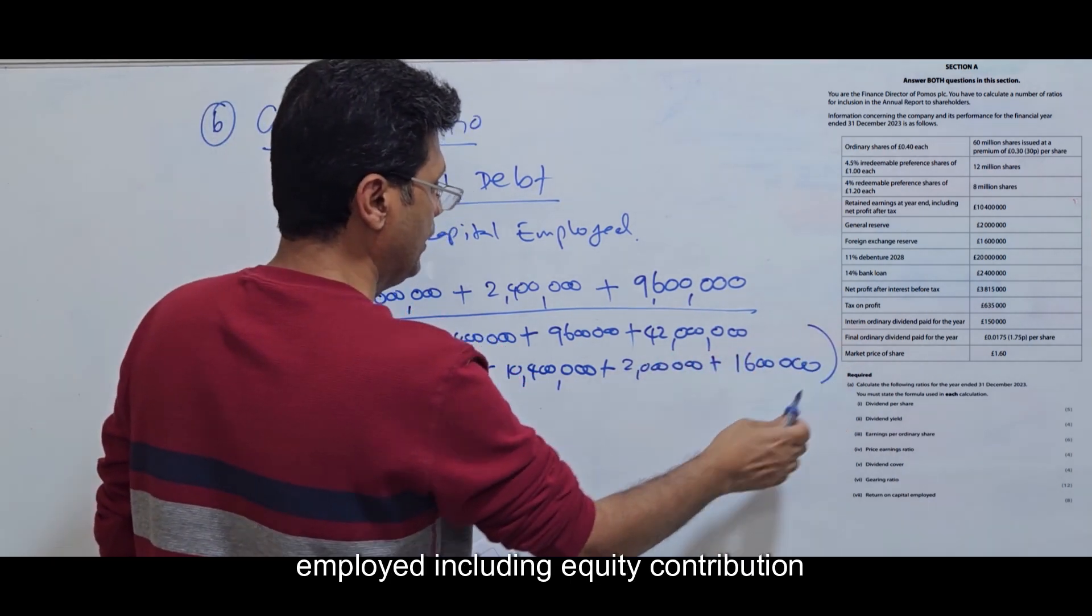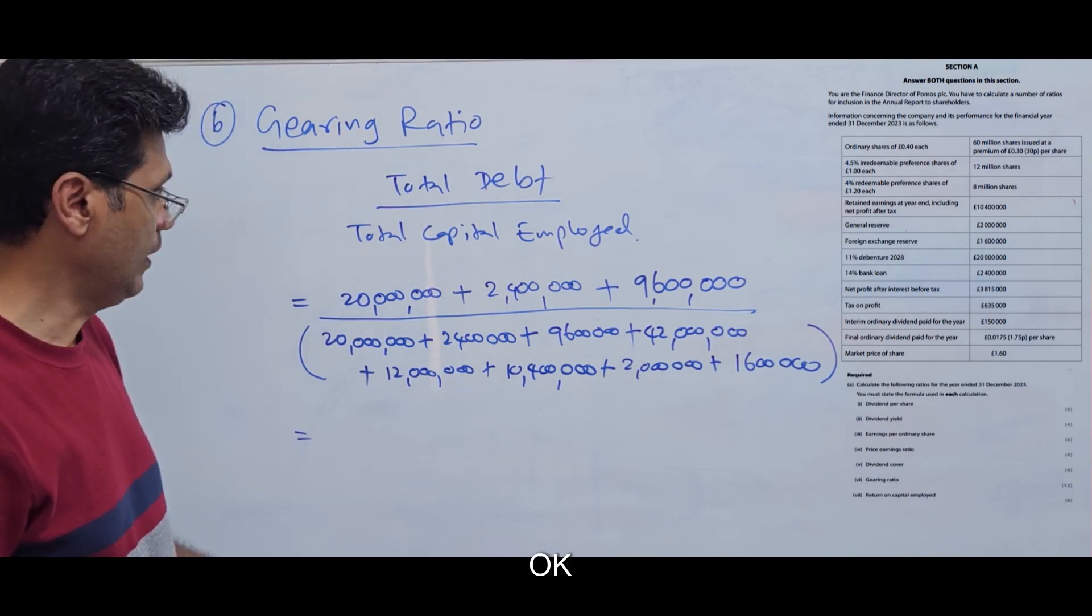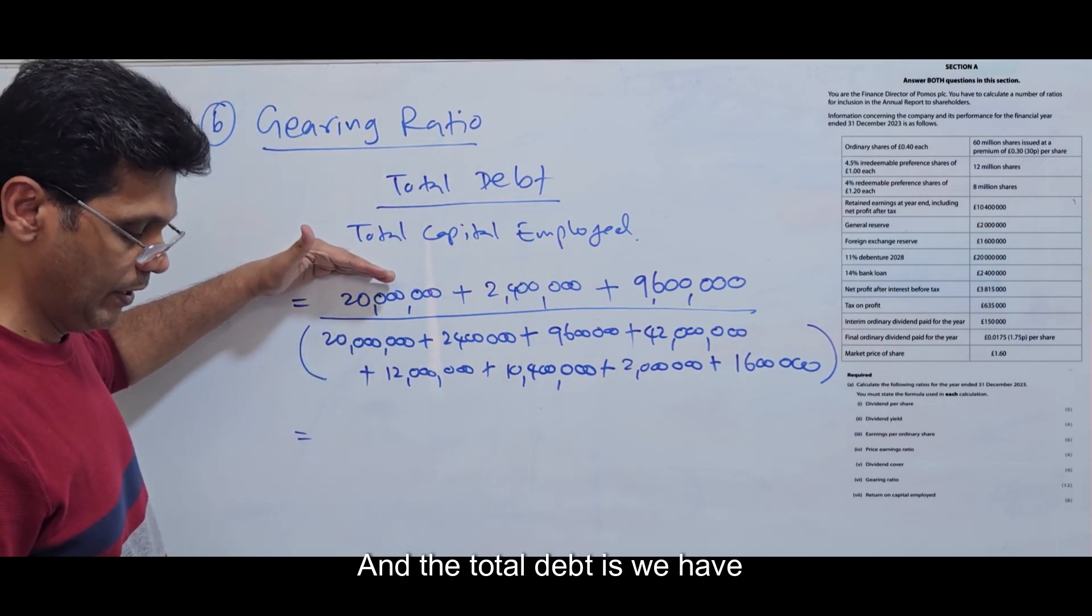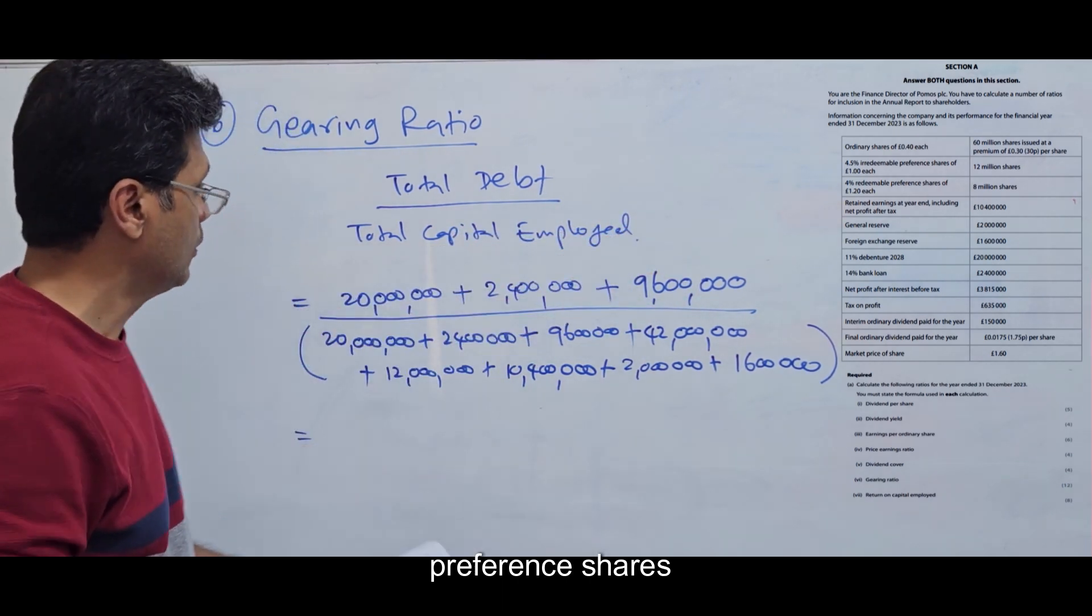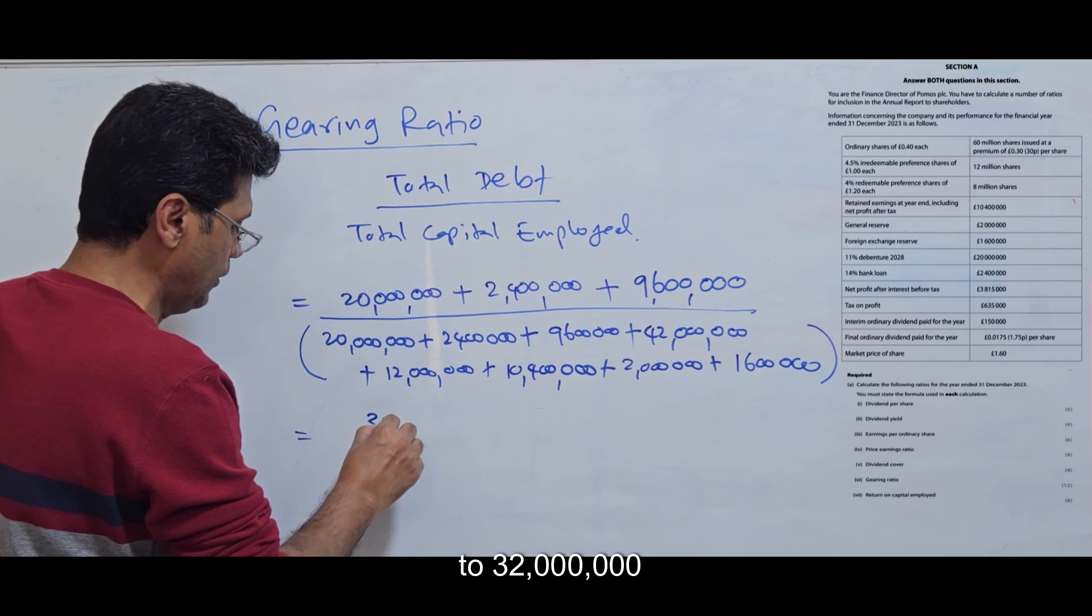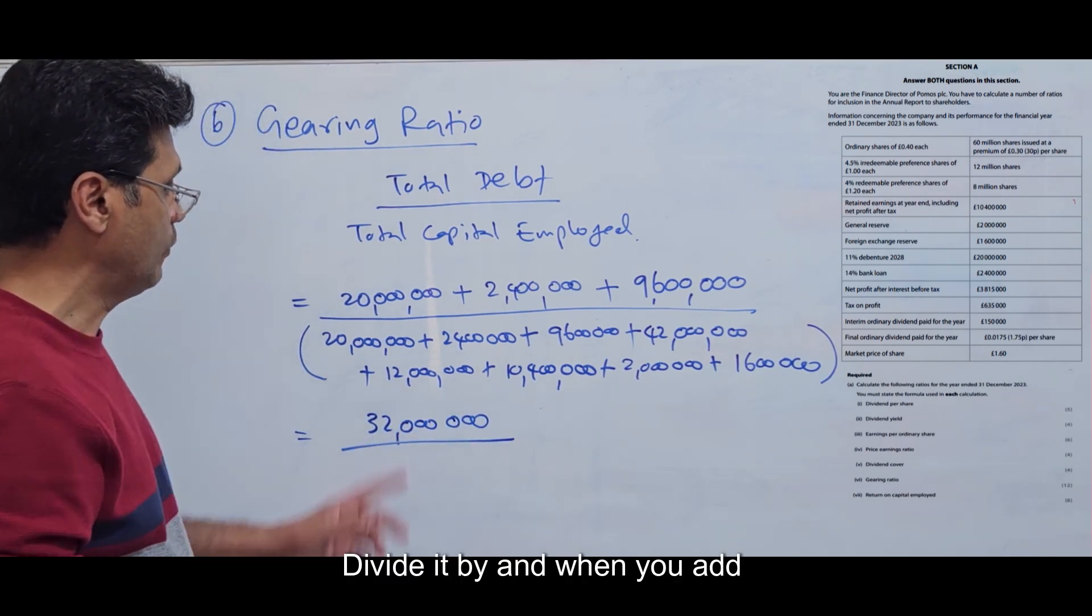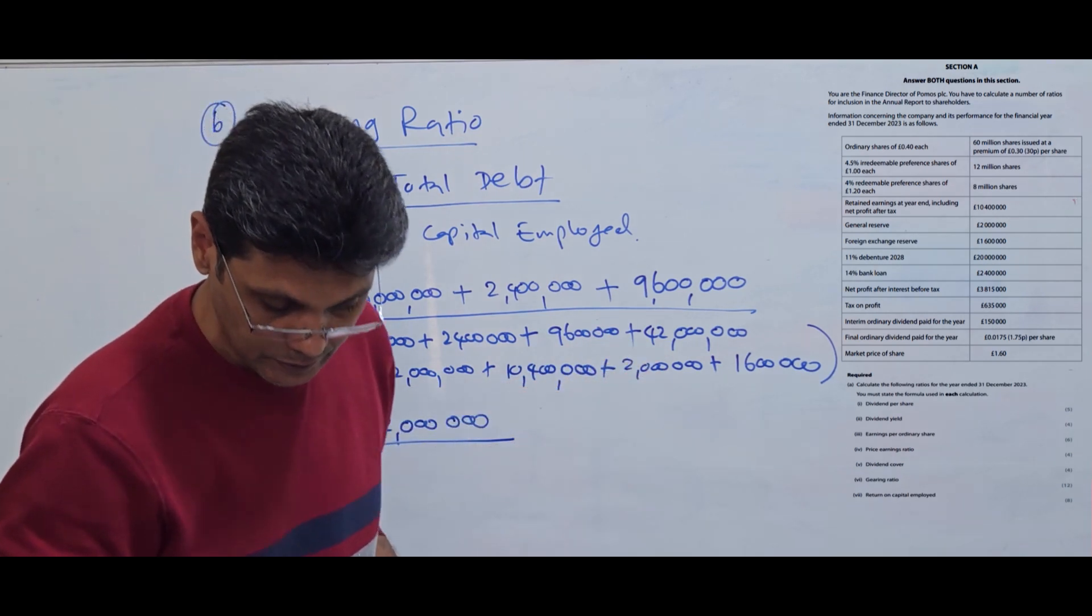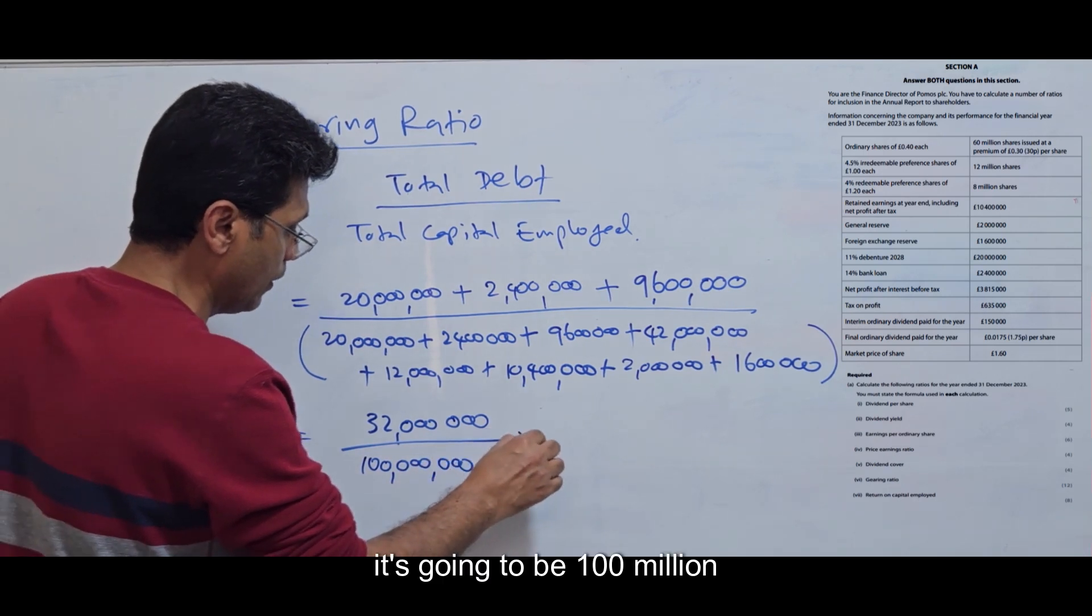This total is the total capital employed including equity contribution and debt contribution. The total debt is debenture, bank loan, and redeemable preference shares. When you add this, it comes to 32 million divided by the total of 100 million.